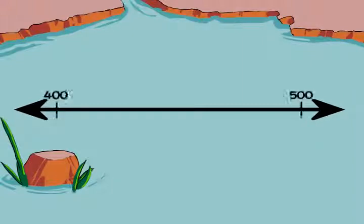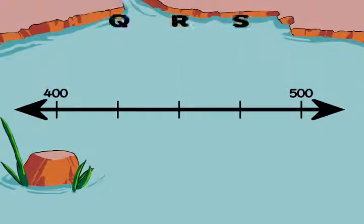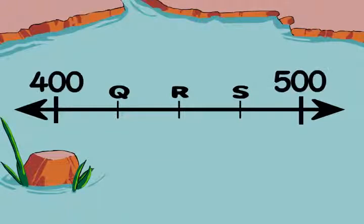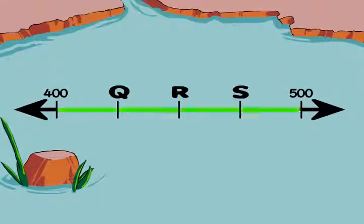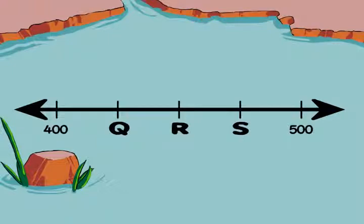You can read any number line in three easy steps. Step one, locate the benchmarks and find the interval between them. Step two, count the equal segments and find each length. Step three, skip count to label the marks between the benchmarks.